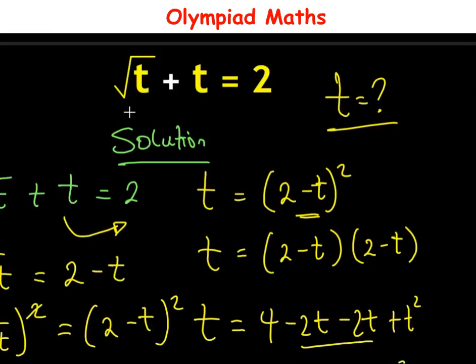Therefore for the equation √t + t = 2, we have only one solution: t = 1. With this ladies and gentlemen we have come to the end of this video. Don't forget to subscribe to this channel — thanks for watching, see you in the next video, bye.